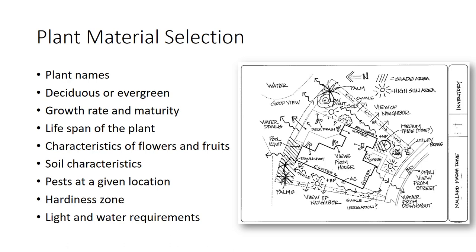Questions about the soil at the location include whether it is well or poorly drained, has good or bad nutrient-holding capacity, is typically acidic or basic, or has many rocks that need to be removed. A knowledge of pests at a given location is extremely valuable information when selecting plant material. The hardiness zone and what plants can be grown in that zone is an important factor to consider. Light requirements—full sun, shade, or partial shade—should also be determined carefully. Water requirements must be understood because different plants have different water requirements in order to live and grow.